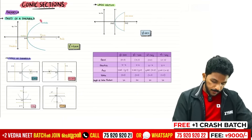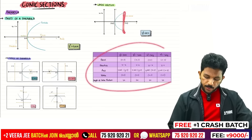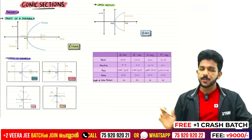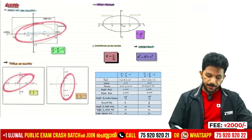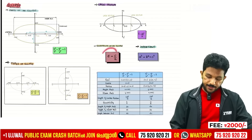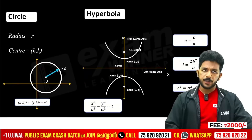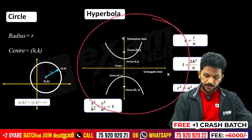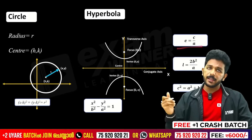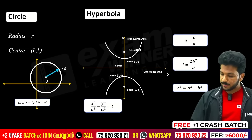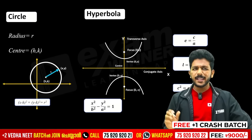Conic sections — parabola: there are 4 types of parabola, very important. Ellipse — there are 2 types, presented in a table. You can use the same formula for the table. Hyperbola and circle: eccentricity e equals c by a, latus rectum L equals 2b squared by a — same formula. This is the minus symbol side for hyperbola; everything else is the same as ellipse. Study circle in the first class.